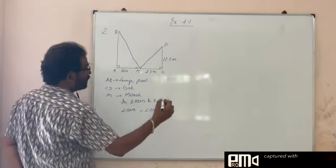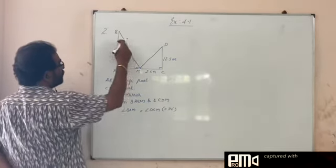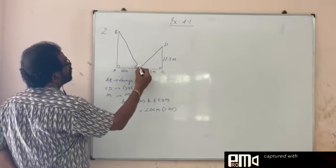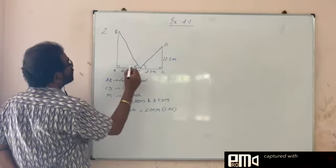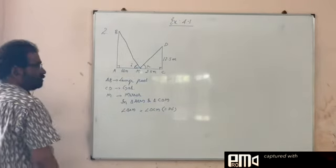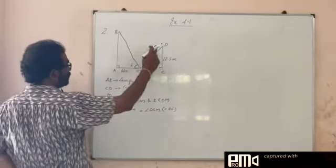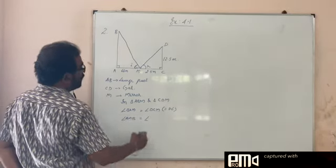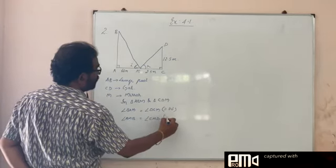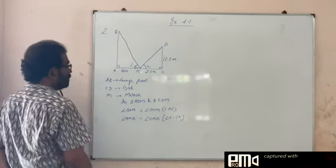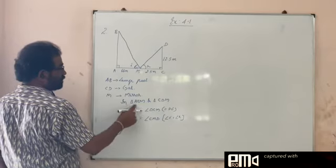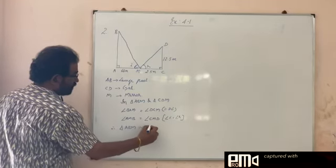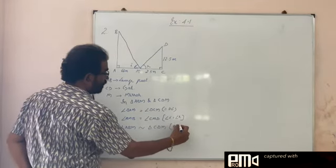Then we can say that angle of incidence and angle of reflection. This is angle of incidence and this is angle of reflection. We know that these two are equal. So we write angle AMB is equal to angle CMB. By the law, angle of incidence is equal to angle of reflection. So by AA similarity, these two triangles are similar. Therefore, triangle ABM is similar to triangle CDM.